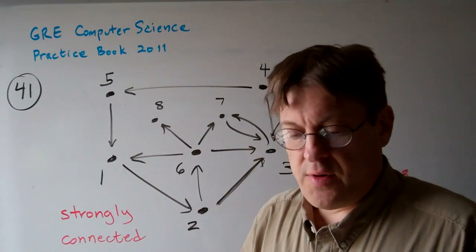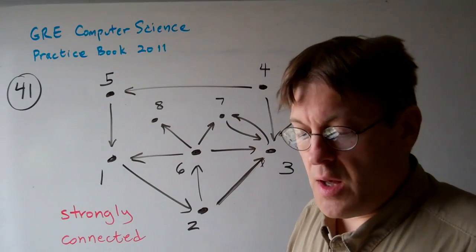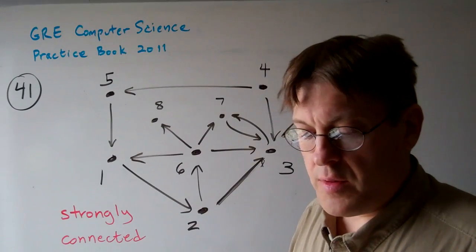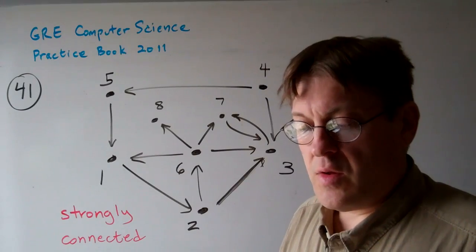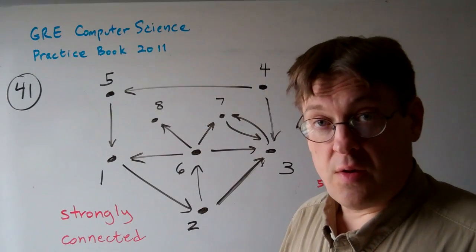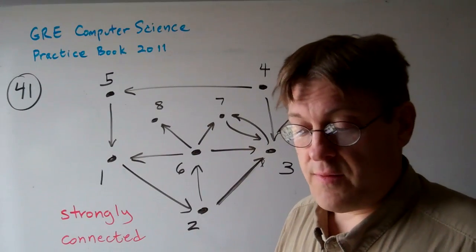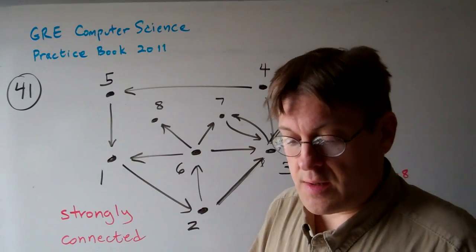Question 41. Given a directed graph, I won't read the whole thing here, it's convenient to represent the connectivity properties using an associated directed acyclic graph, where the vertices are strongly connected components.